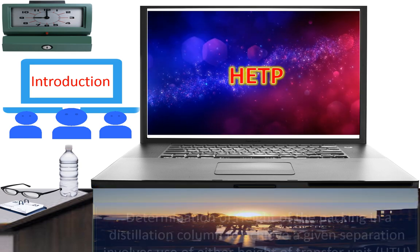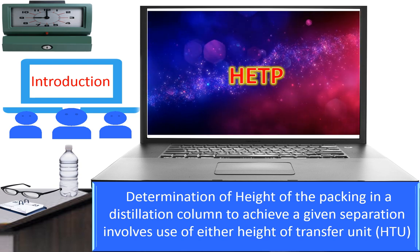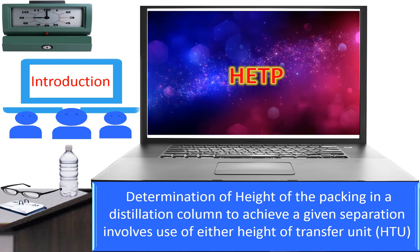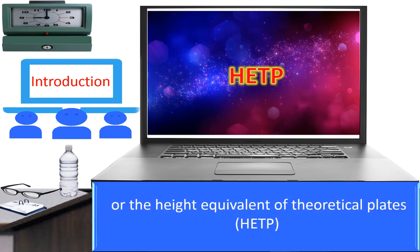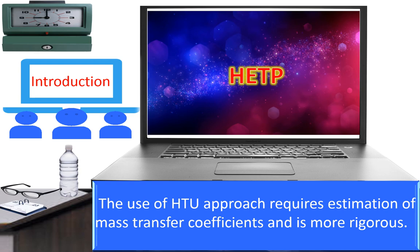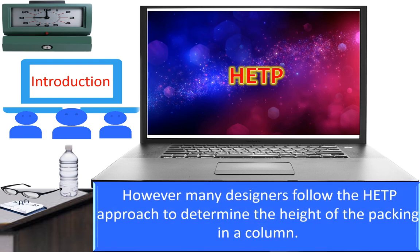Determination of height of packing in a distillation column to achieve a given separation task involves use of either the height of a transfer unit (HETU) or the height equivalent of theoretical plates (HETP). The use of the HETU approach requires estimation of mass transfer coefficients and is more rigorous. Literature provides a number of design procedures for determination of HETU. However, many designers follow the HETP approach to determine the height of packing in a column.